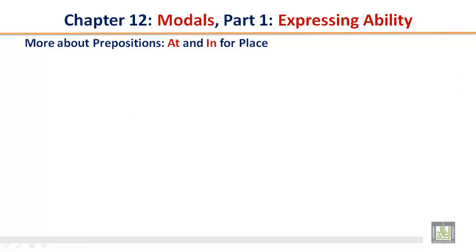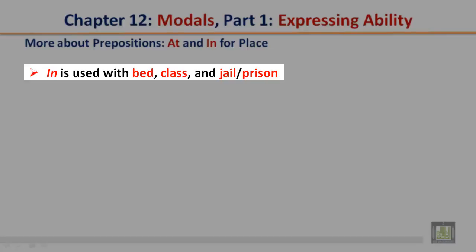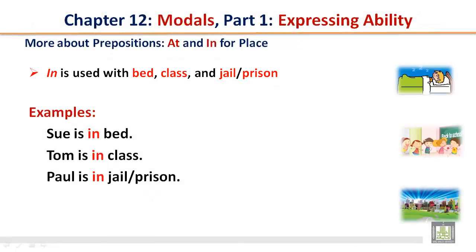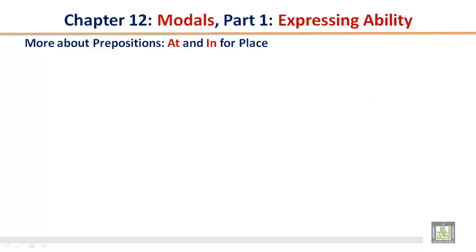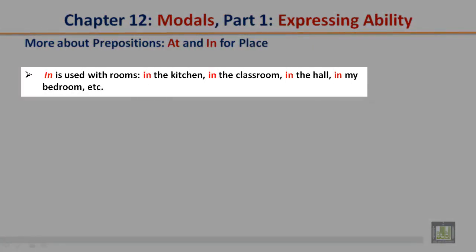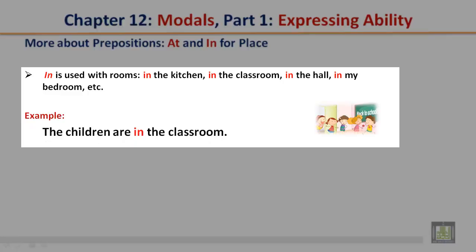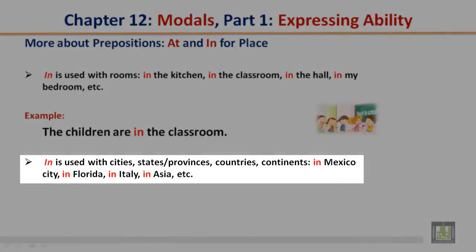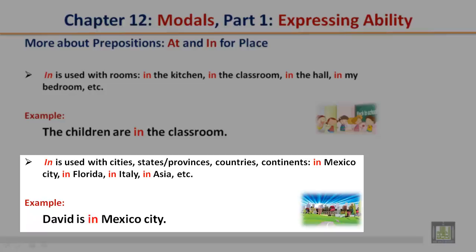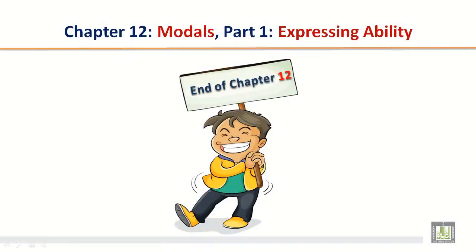More about prepositions: at and in for place. In is used with bed, class, and jail or prison. Examples: Sue is in bed; Tom is in class; Paul is in jail or prison. In is also used with rooms: in the kitchen, in the classroom, in the hall, in my bedroom. Example: The children are in the classroom. In is used with cities, states or provinces, countries, or continents: in Mexico City, in Florida, in Italy, in Asia. Example: David is in Mexico City. End of chapter 12.